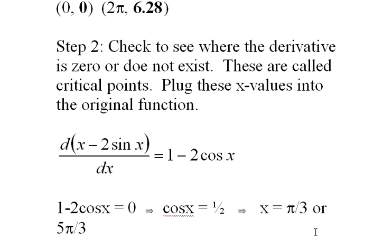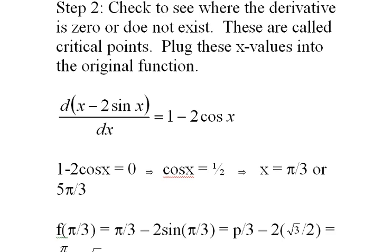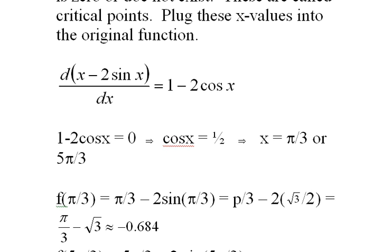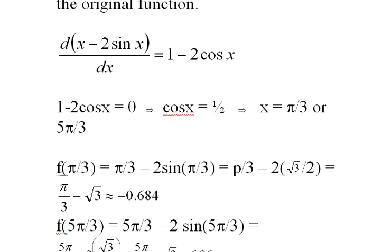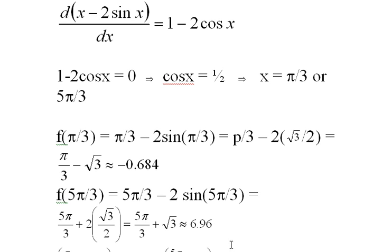We take these values and plug them into the function. In the first instance, plugging in π/3, we end up with π/3 - √3, which is approximately -0.684. Then we plug in 5π/3 and we get 5π/3 + √3, which is approximately 6.96.